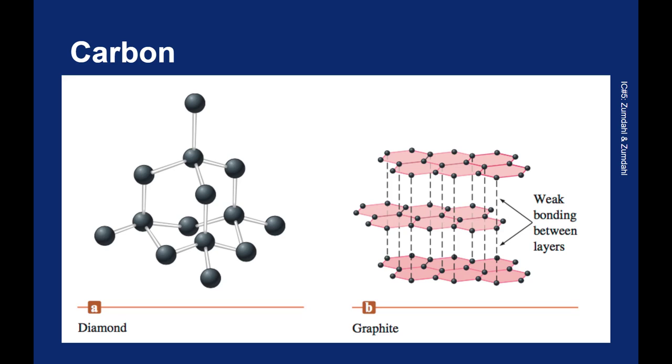A single sheet of graphite, by the way, is called graphene. And you can actually take a block of graphite and use scotch tape to peel away single layers of graphene from a block of graphite.